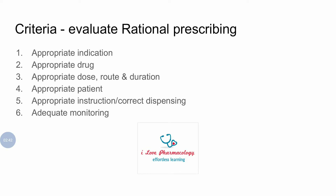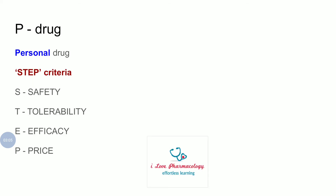The fifth criterion is appropriate instructions to the patient as well as the correct dispensing procedure. The sixth is follow-up — that is, adequate monitoring. So in summary: appropriate indication, appropriate drug, appropriate dose/route/duration, appropriate patient, appropriate instructions, and adequate monitoring.